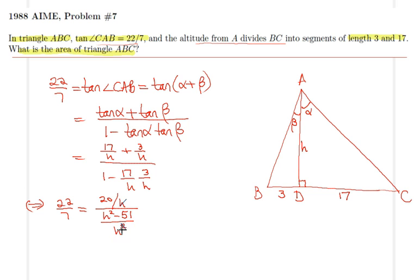Therefore, this ratio would be equal to 20H over H squared minus 51. We can do cross multiplication. Once we do the cross multiplication and organize things around...